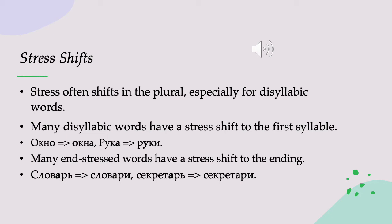If you have an end-stressed word — a word stressed on the last syllable in the singular — it can also shift onto the ending when you add an ending. Note that okno and ruka do not increase their number of syllables when we add the ending; instead they shift stress. But the next two words, slovar, dictionary, and sekretar, a male secretary, actually add a syllable when we add an ending, and that stress shifts onto that new syllable. So slovar becomes slovari, dictionaries, and sekretar becomes sekretari, male secretaries.